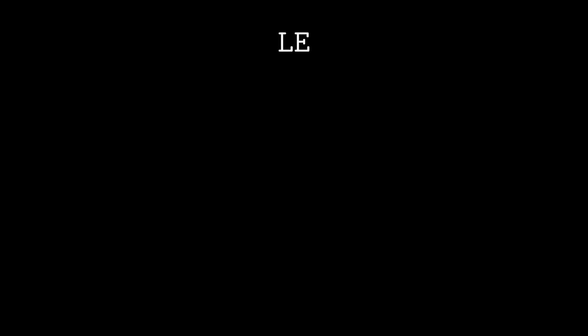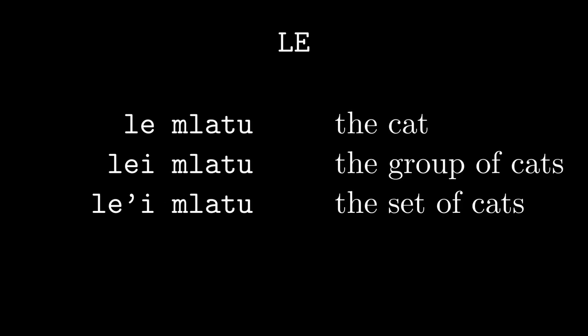Now let's talk about the six gadri in Selmaho LE. The first three are le, le'i, and le'i, and correspond to la, la'i, and la'i, except the article means that you have a specific instance of the thing in mind — like the English article 'the.' So: le mlatu, 'the cat'; le'i mlatu, 'the cats as a group'; le'i mlatu, 'the set of cats.'